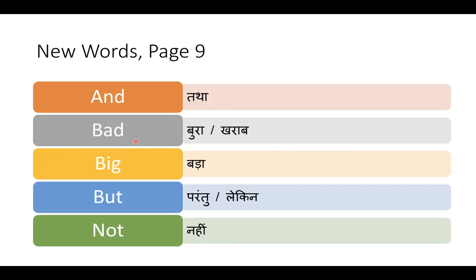Ayo bacho, ab jo shabd humne padhe hain, hum unke meaning jante hain — shabd aur word meaning. Sabse pahla shabd: and — a-n-d, and. And ka arth hota hai tatha ya aur. Doosra shabd: bad — b-a-d, bad. Bad ka meaning bura ya kharaab.